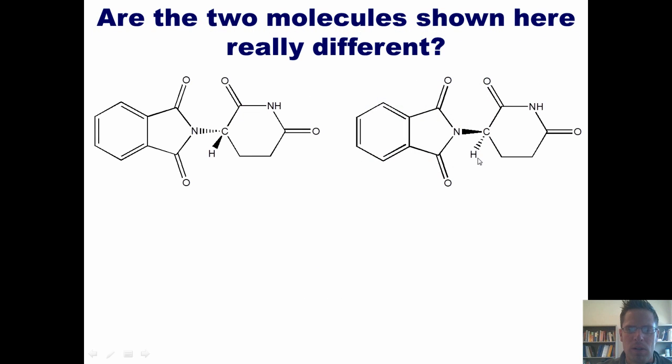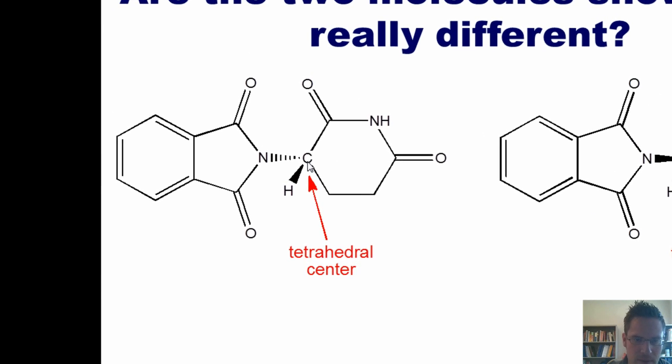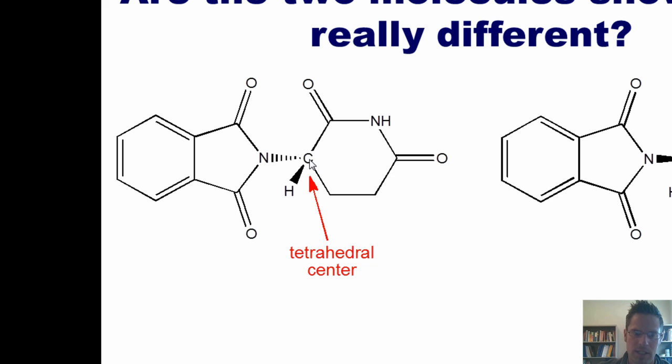So that begs the question, look at these two molecules here. Are they really different or are they the same? Well, if you look at them closely, you'll notice that they do indeed have a tetrahedral center, this carbon center in each. You'll also notice that the tetrahedral centers in these molecules are indeed bonded to four different substituents. Let's look at this one to the left, for example. This carbon, having a tetrahedral geometry around it, is bonded to a hydrogen in one direction, a nitrogen in another direction, a carbon in another direction, and a different kind of carbon in another direction. Now, occasionally, new students are tempted to think that this carbon and this carbon are both the same because they're both carbons.